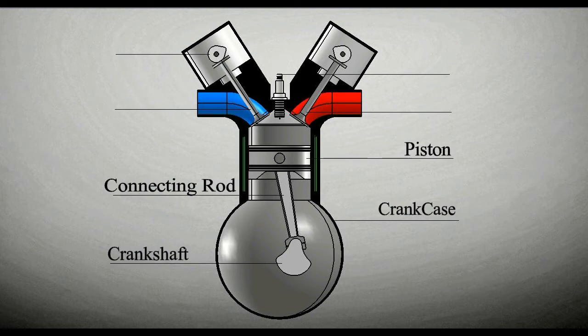The inlet valve is used to control the flow of air and fuel mixture. Inlet valves are exposed to a temperature of 500 degrees Celsius. The outlet valve is used to control the discharge of residuals from the system.